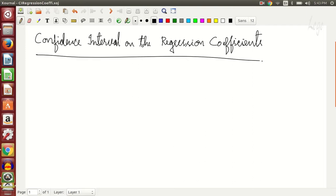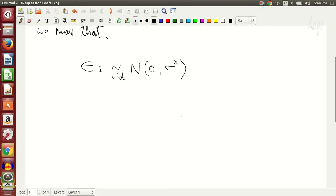So we begin with the fact that we know that the error term follows normal distribution. We know the error term is independent and identically distributed and follows a normal distribution with mean zero and variance sigma square.